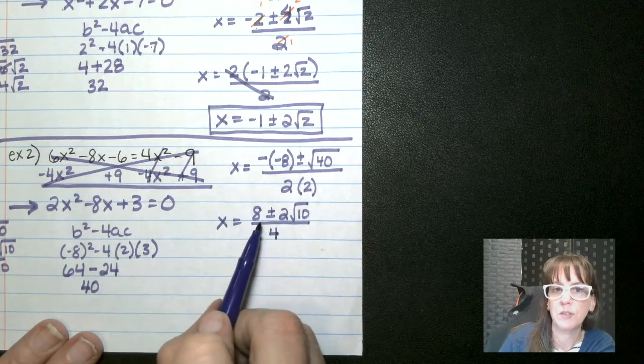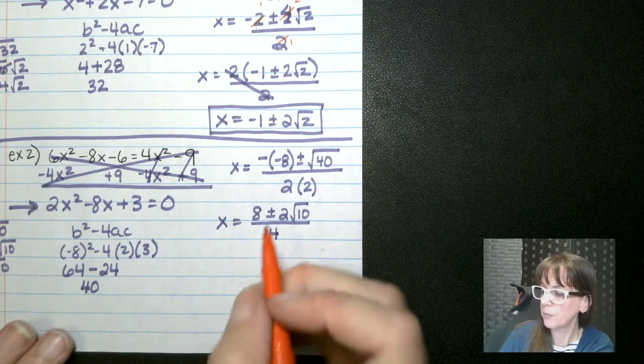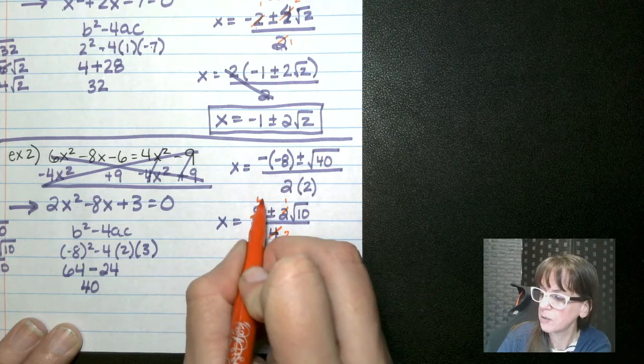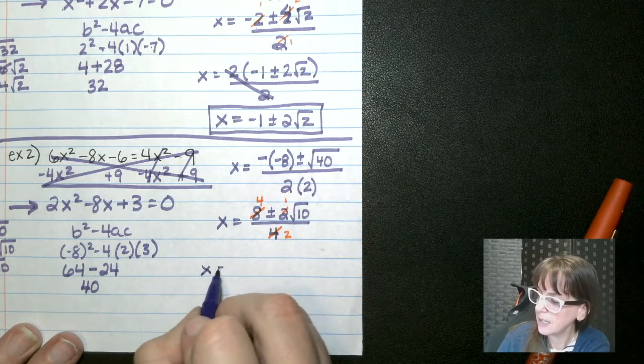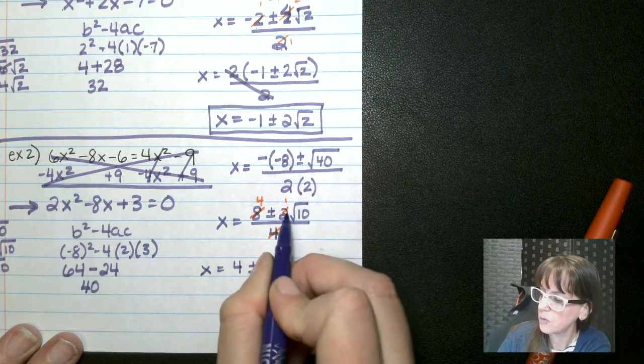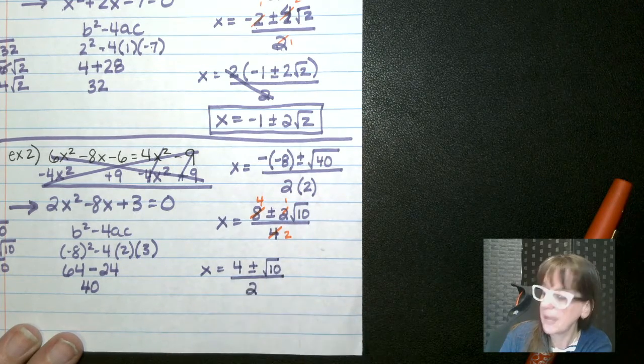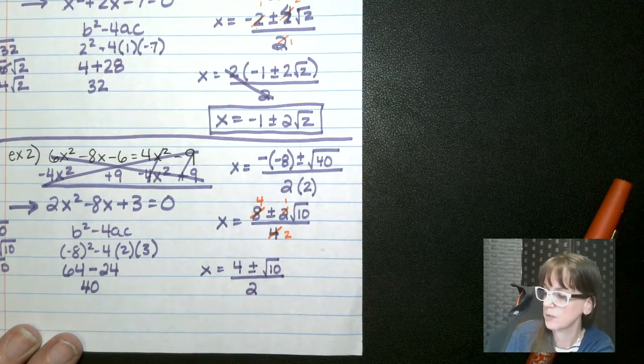Now again, you want to ask yourself, do these three things have something in common? They do. It's a 2. So divide by 2. You get 1. Divide by 2. You get 2. Divide by 2. You get 4. So what are we left with then? We have x equals 4 plus minus 1 root 10, or just root 10, over 2. And that's it. You cannot cancel these out. It has to be all three. So you can't. Don't go trying to cancel those out.